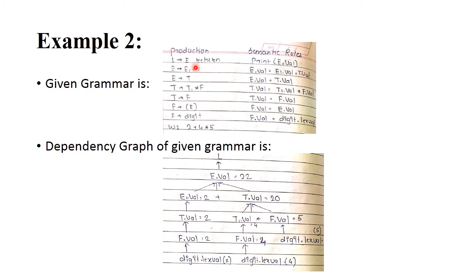Let's look at another example. The given grammar is: L → E, E → E1 + T, E → T, T → T * F, T → F, F → digit. These are the semantic rules — how semantic rules are generated was covered in my previous video. For E → E1 + T, both are non-terminals, so the semantic rule is: E.value = E1.value + T.value, because each node in the grammar stores a particular value.